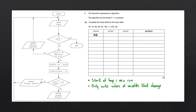Following the arrow, we get to a decision block. The decision asks: is the value equal to negative one? The value of this variable is 50 at the moment, which is not equal to negative one. The answer is no, so we'll follow this line to another decision.